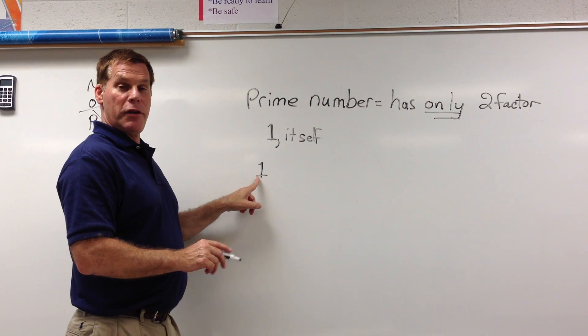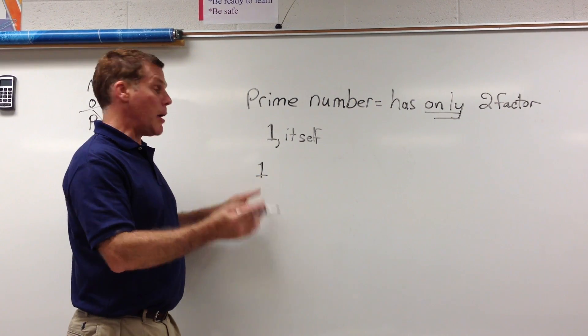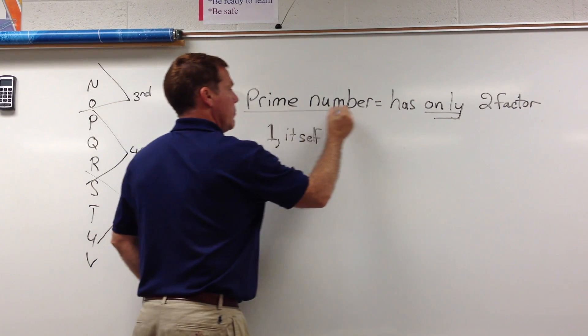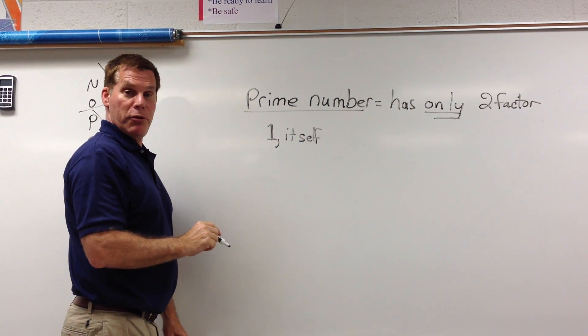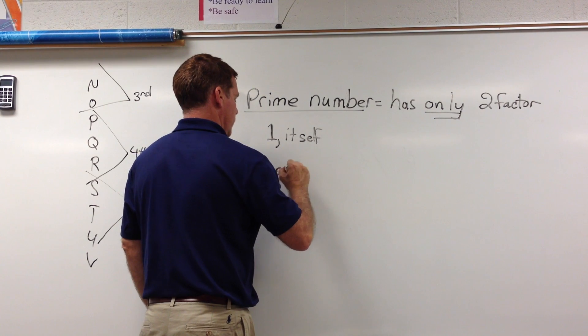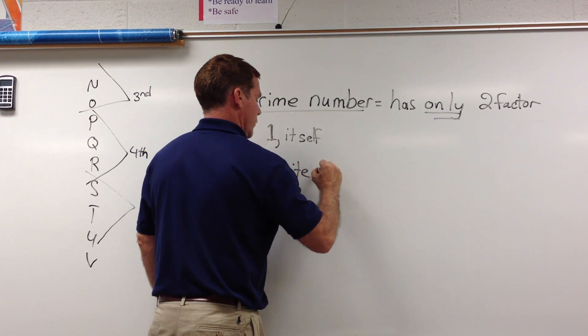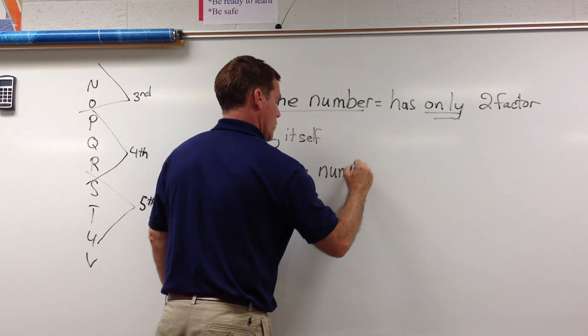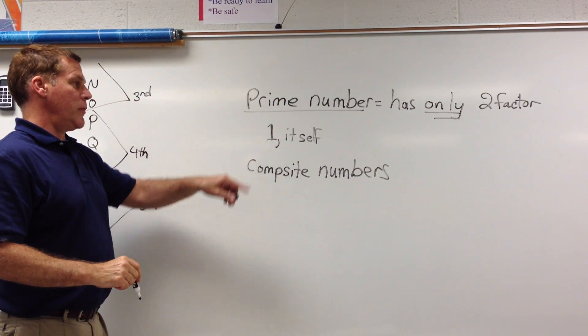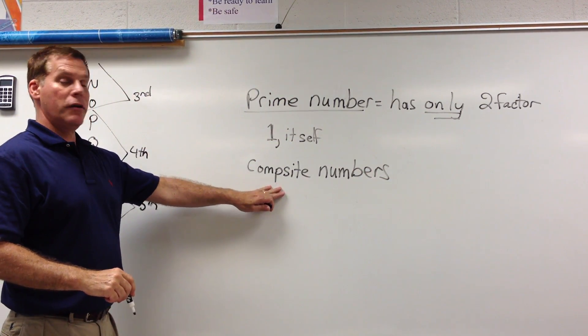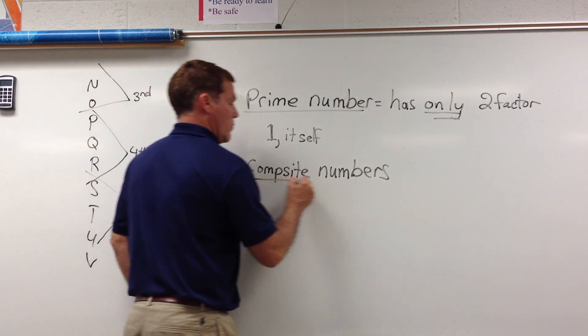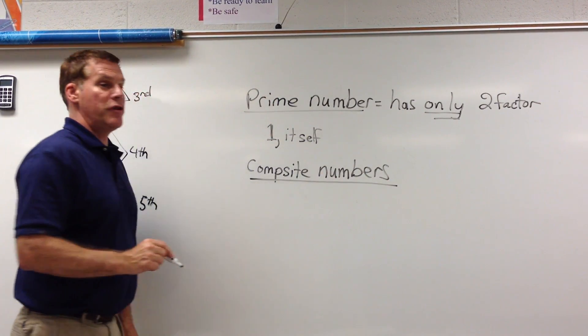So one is going to be considered like a special number. We'll talk about that later. All other numbers that are not prime numbers, and we're talking about whole numbers here, are going to be called composite numbers. If it is not prime and they're whole numbers, they're going to be composite numbers. That is what students have to know.